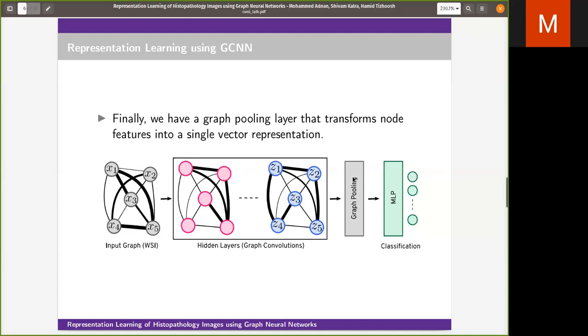And finally, we use graph pooling layer to get a single compact feature vector representing the WSI, which can be further used for classification tasks or any task depending on the problem.